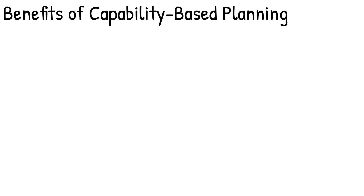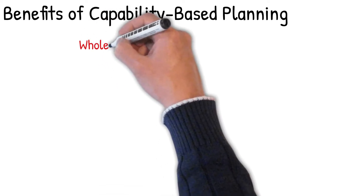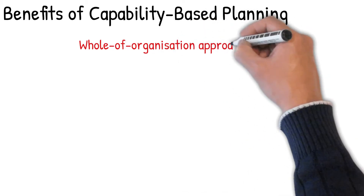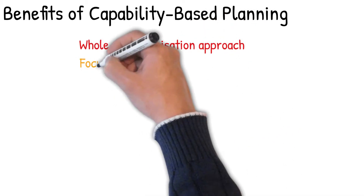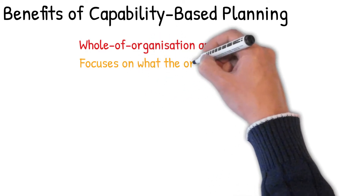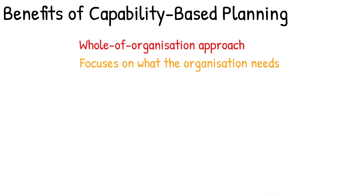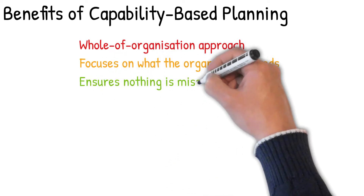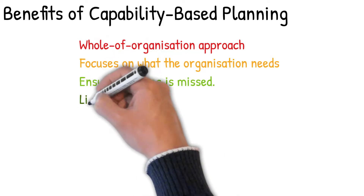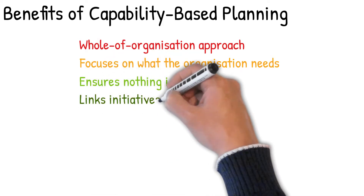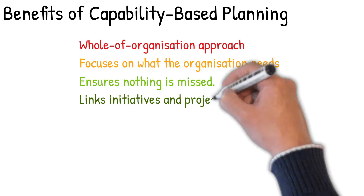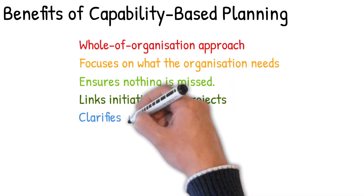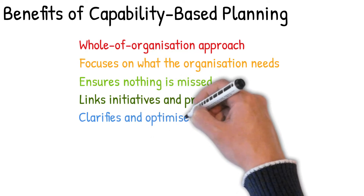What are the benefits of capability-based planning? Its whole-of-organisation approach breaks through departmental silos by shifting from a functional view to a capability-based view. It focuses directly on what an organisation needs to do to execute its strategy. It provides a map of the organisation's overall capabilities to ensure that nothing is missed. It directly links initiatives and projects back to the capability changes and in turn back to the organisation's objectives. It helps to determine the highest priority capabilities that you need to develop and related initiatives.